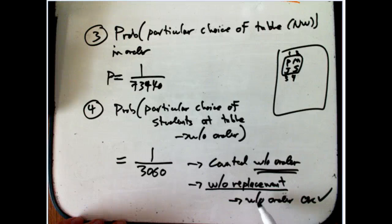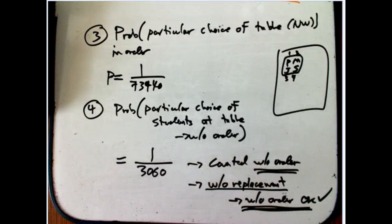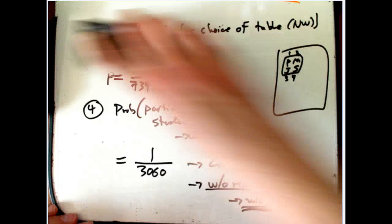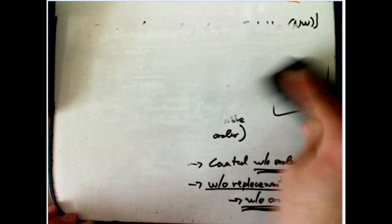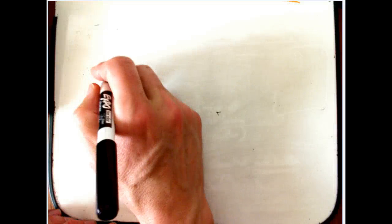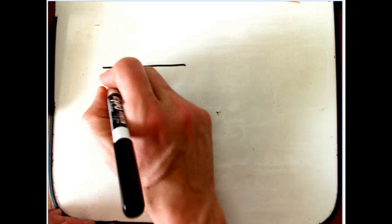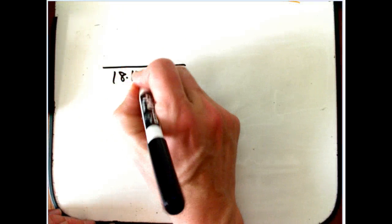But when you're doing something without replacement, we'll explain why this works, that you can actually count without order as long as you don't care about yourself. Let me show you in this case that even if we did count it with order, we would get the same answer. And if you're worried about it, you can always count with order, and it's the safe way to do it.